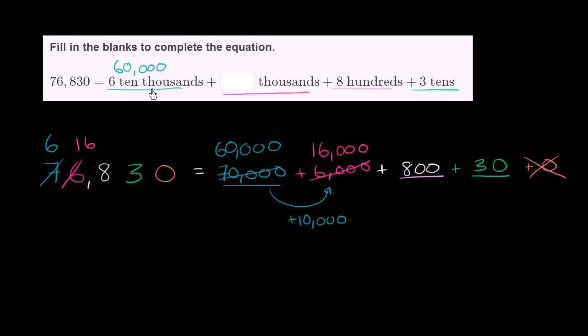So now what we wrote here looks just like what they wrote up here. This is 6 ten thousands plus 16 thousands plus 8 hundreds plus 3 tens. And we're done.